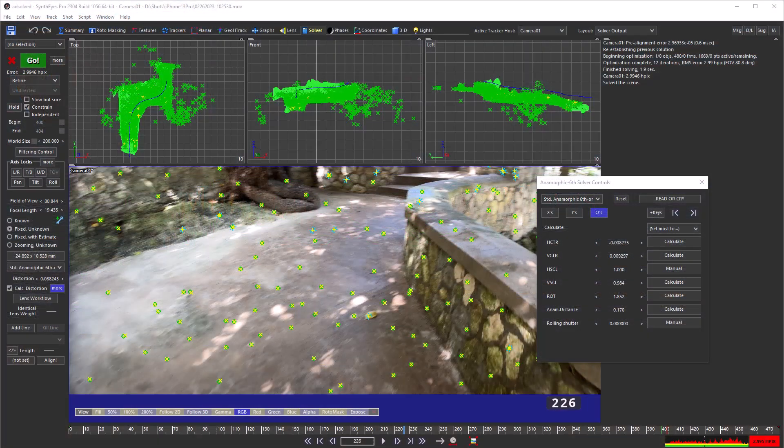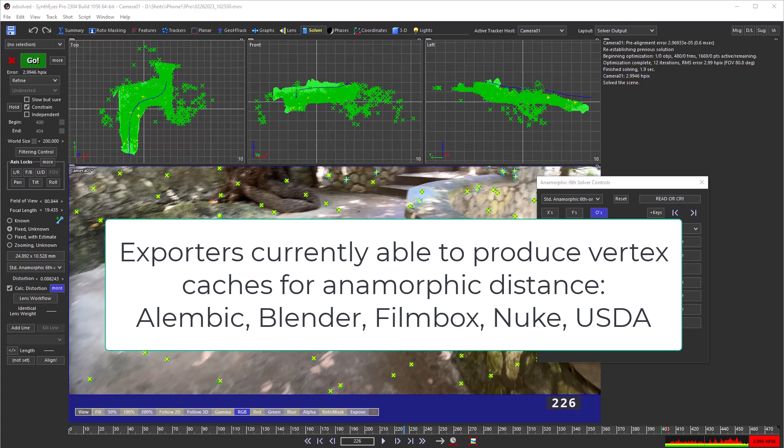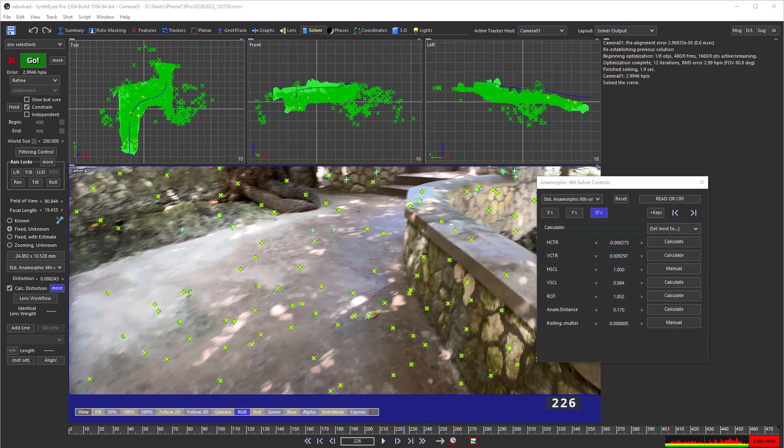We can use a vertex cache to store a compensated version of a mesh on every frame, taking into account the camera viewpoint on that frame. The SynthEyes exporters for FilmBox, Alembic, USDA, Nuke, and Blender can produce vertex caches for every mesh when anamorphic distance is present.